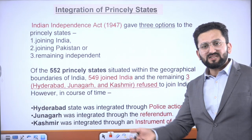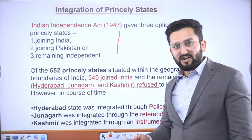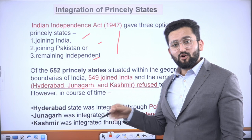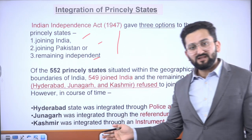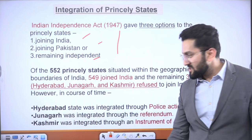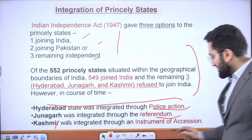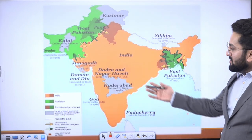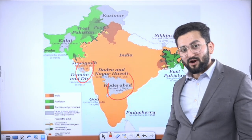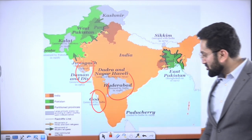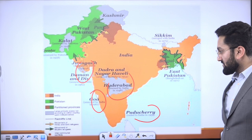There was also the integration of princely states. When the British Parliament enacted the Indian Independence Act 1947, they gave three options: either join India, join Pakistan, or claim independence. That is why we have the Kashmir issue. Hyderabad, Junagadh, and Kashmir were reluctant to join. Hyderabad got integrated through police action, Junagadh through a referendum, and Kashmir through the Instrument of Accession. Dadar and Nagar Haveli and Goa were part of Portuguese territory, and Pondicherry was part of French territory — we took all of them to build a consolidated India.